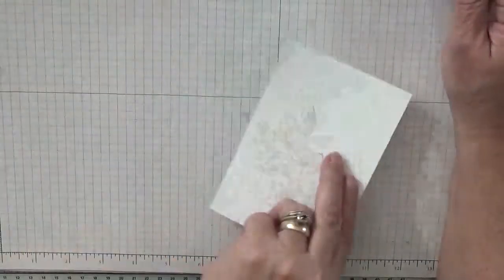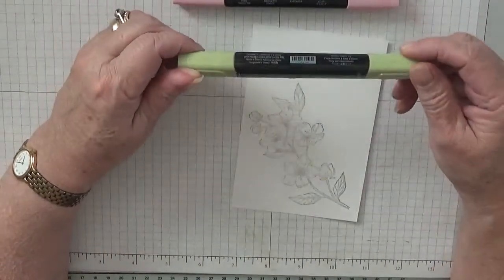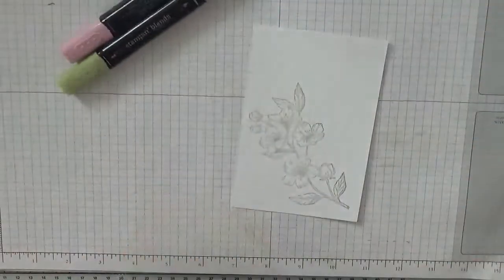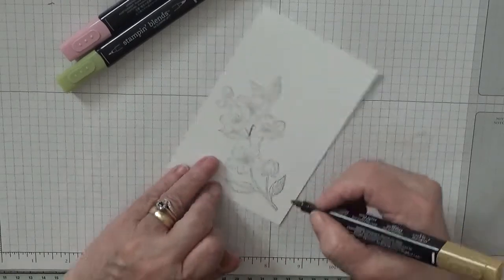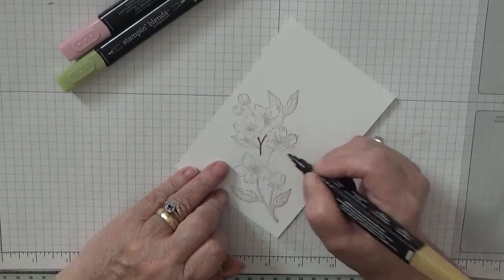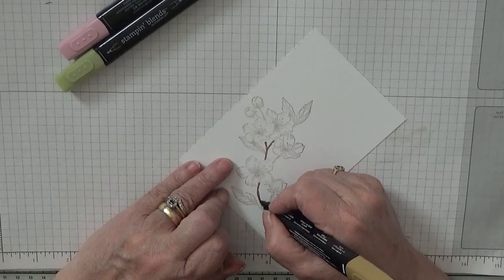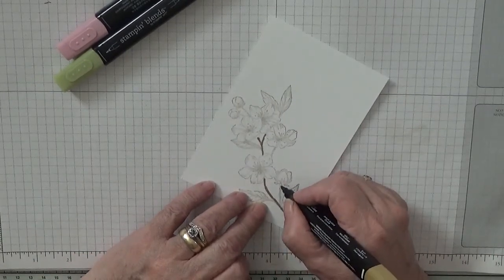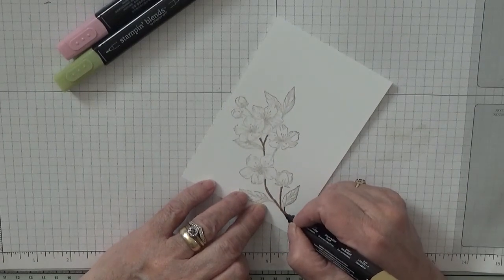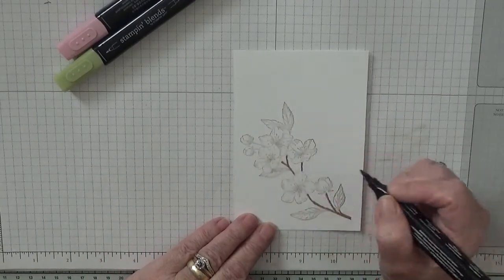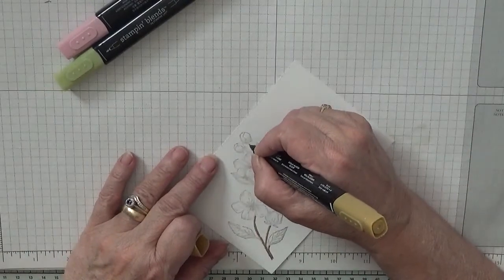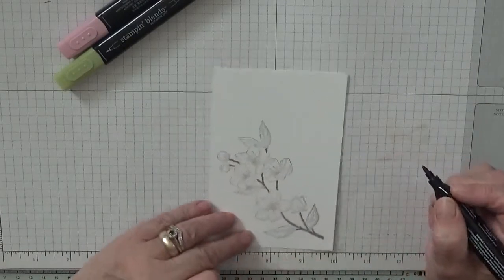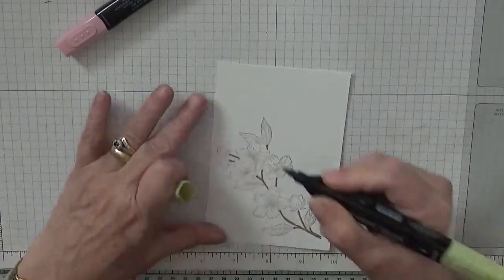Right, bring our flower back in. We're going to color it using light old olive, dark pink pirouette, and soft suede light. And with this we'll just go down the stems. That is it. Right, coloring the leaves.